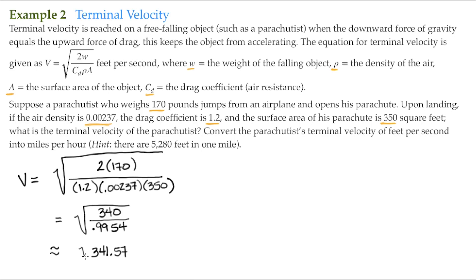So 340 divided by 0.9954 is approximately equal to 341.57. And of course, it's the square root of that. So then the square root of 341.57, again, that's approximately equal to 18.48.